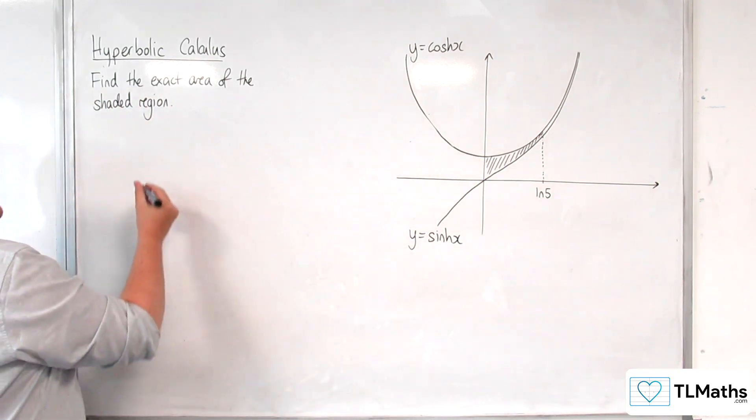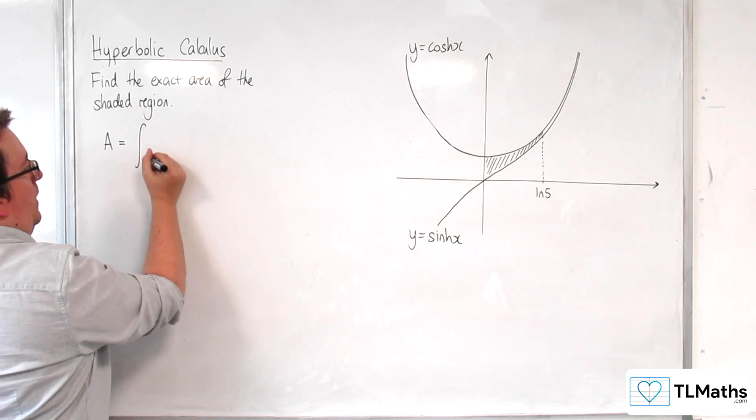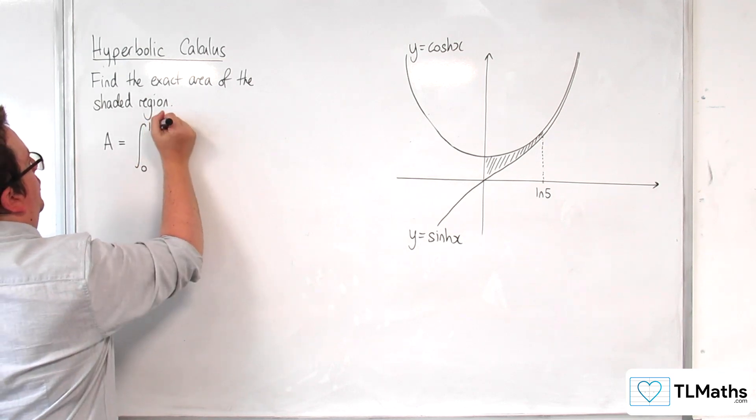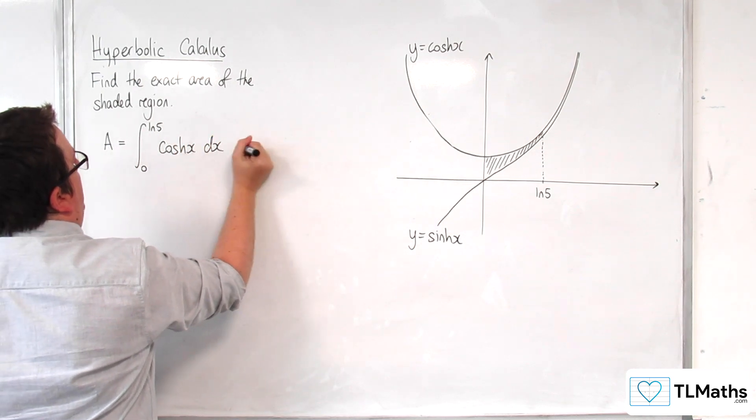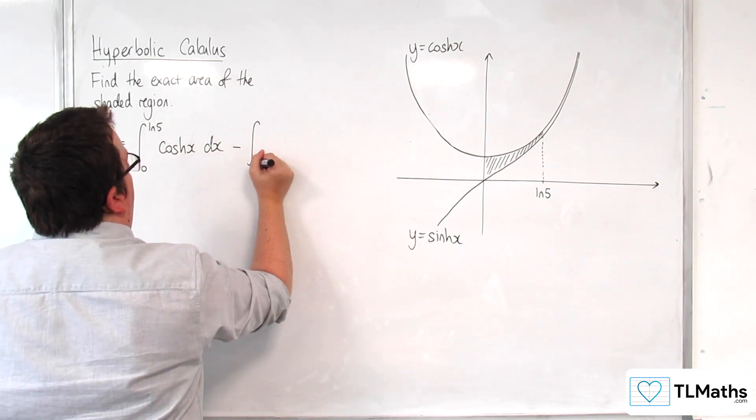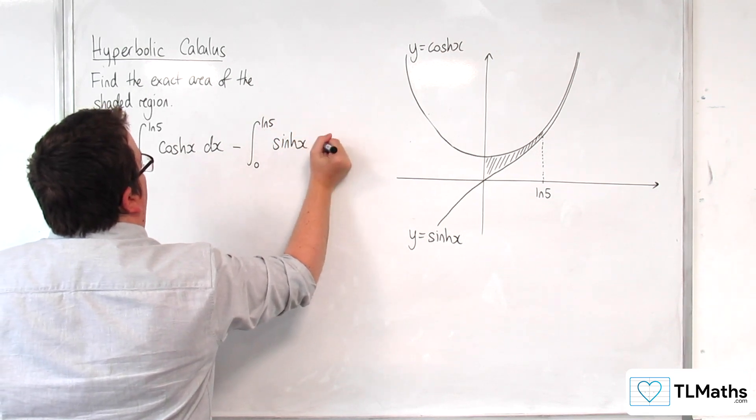So this area is equivalent to the integral between 0 and log 5 of cosh x dx and then take away the integral between 0 and log 5 of sinh of x dx.